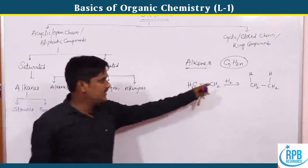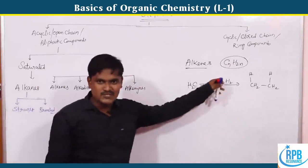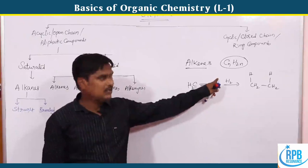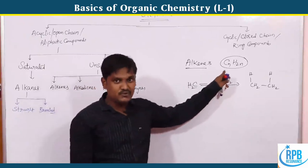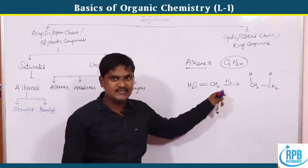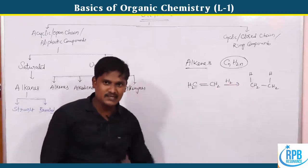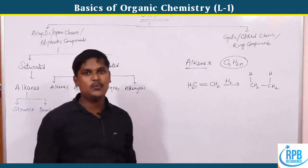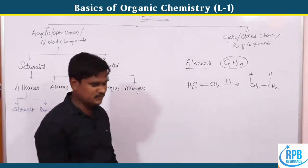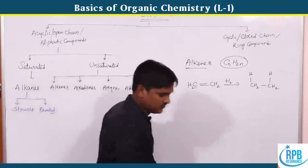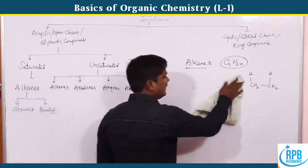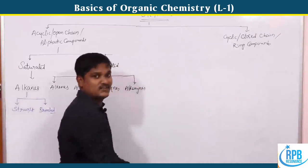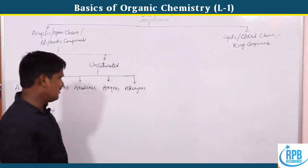The general formula for alkenes is CnH2n. For example, starting from C2H4 and C3H6 — these are part of the alkene homologous series, which are unsaturated compounds.